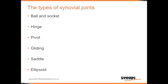Gliding joints have smooth surfaces that run over each other, such as the carpals and the tarsals. The saddle joint, which can be found in the thumb, also has a big range of motion, very similar to the ball and socket joint, however it cannot rotate.